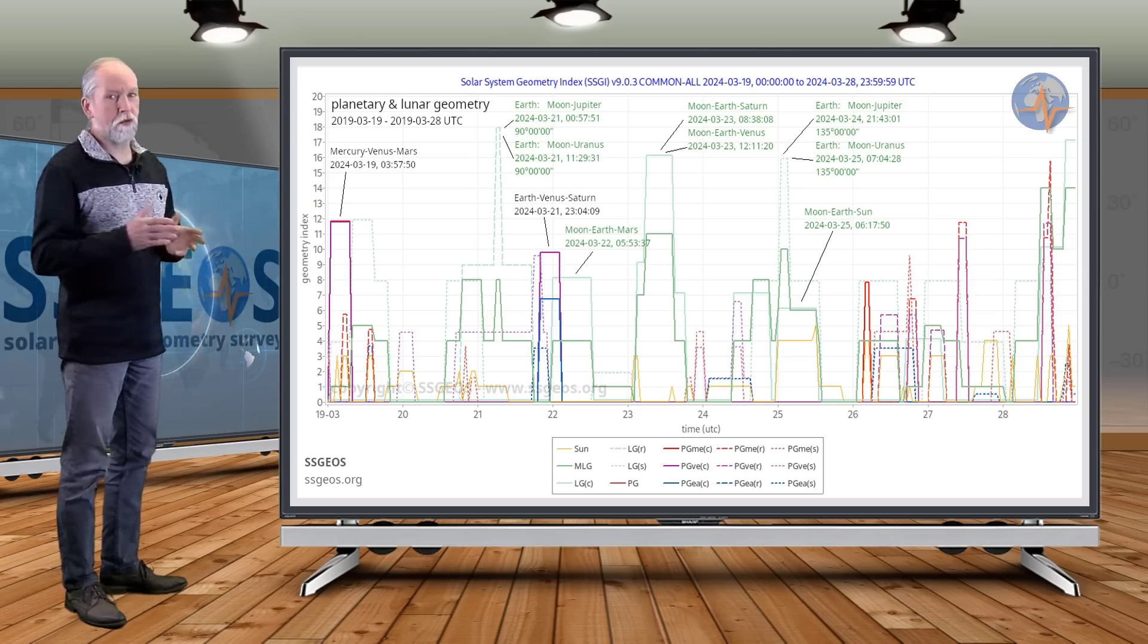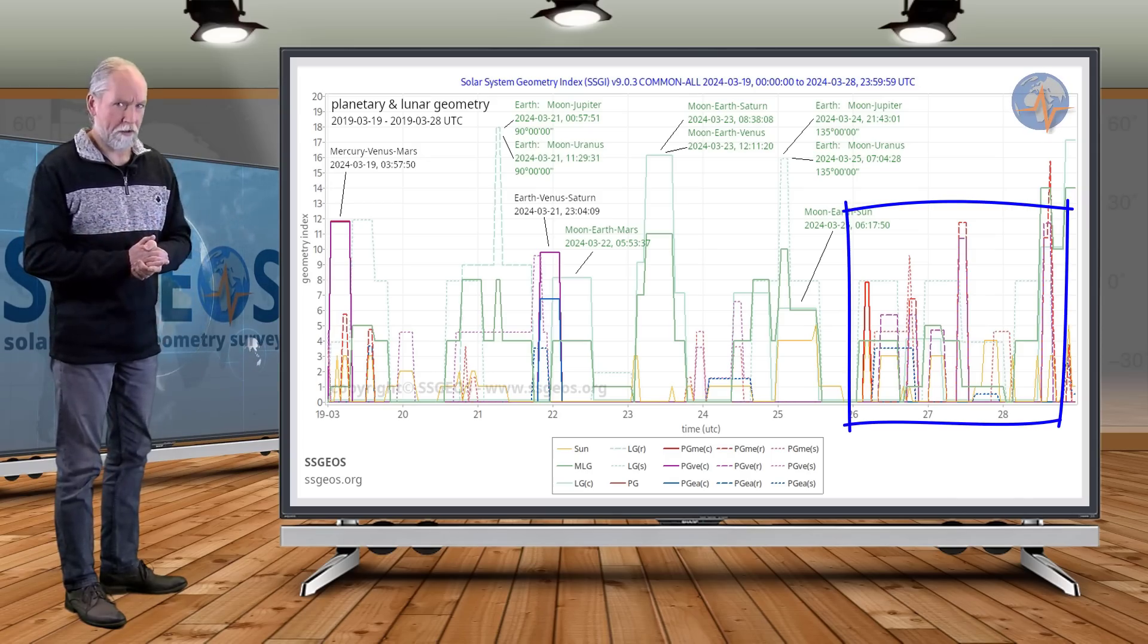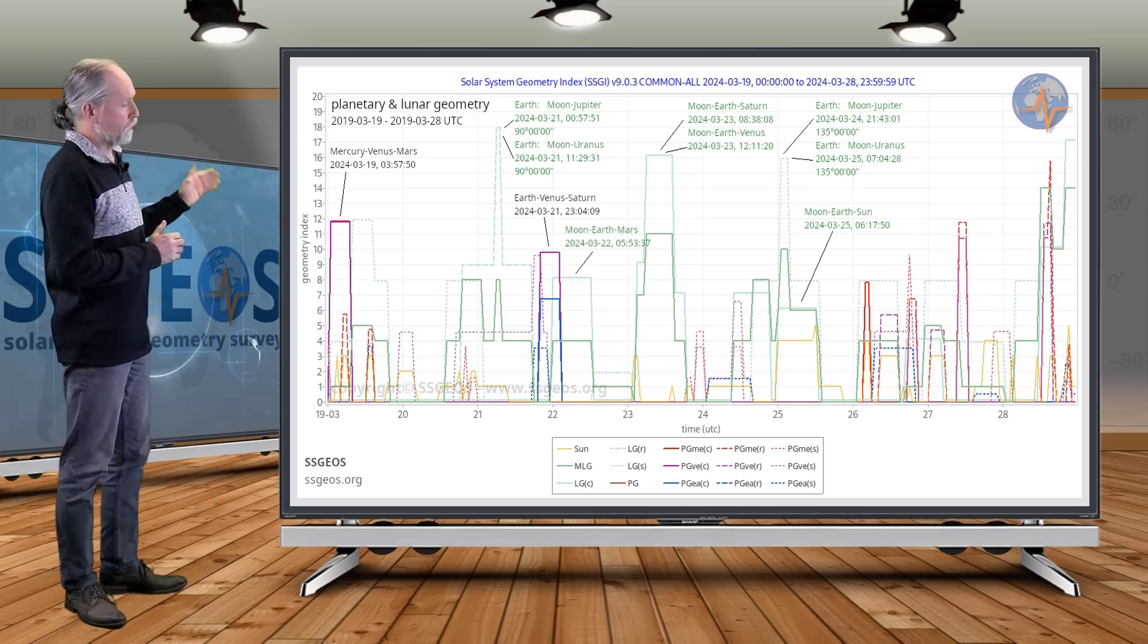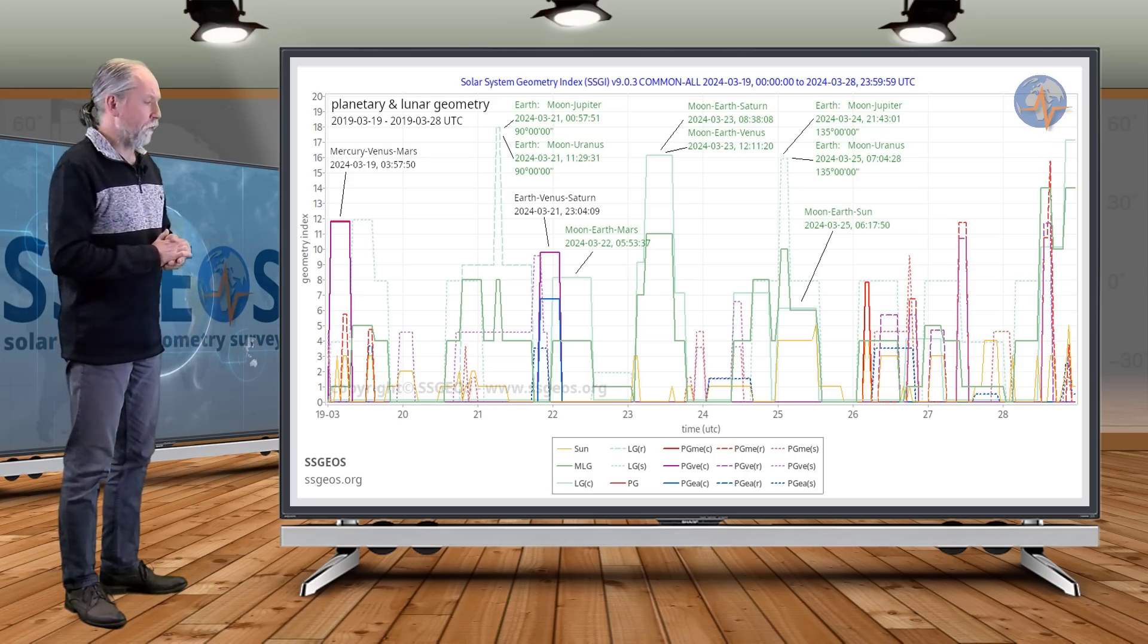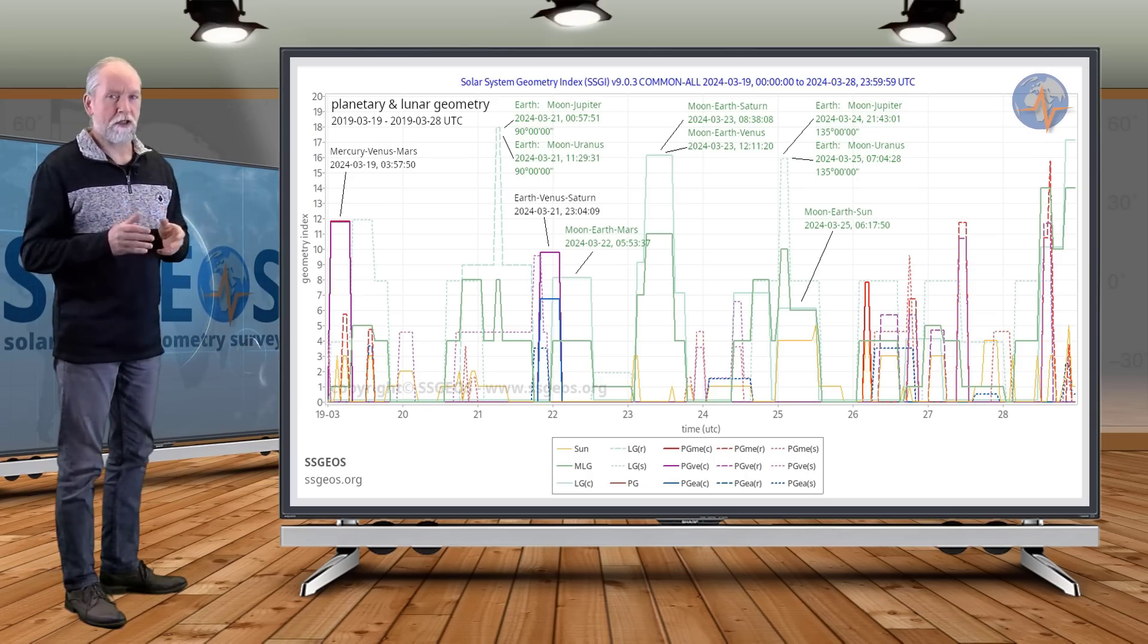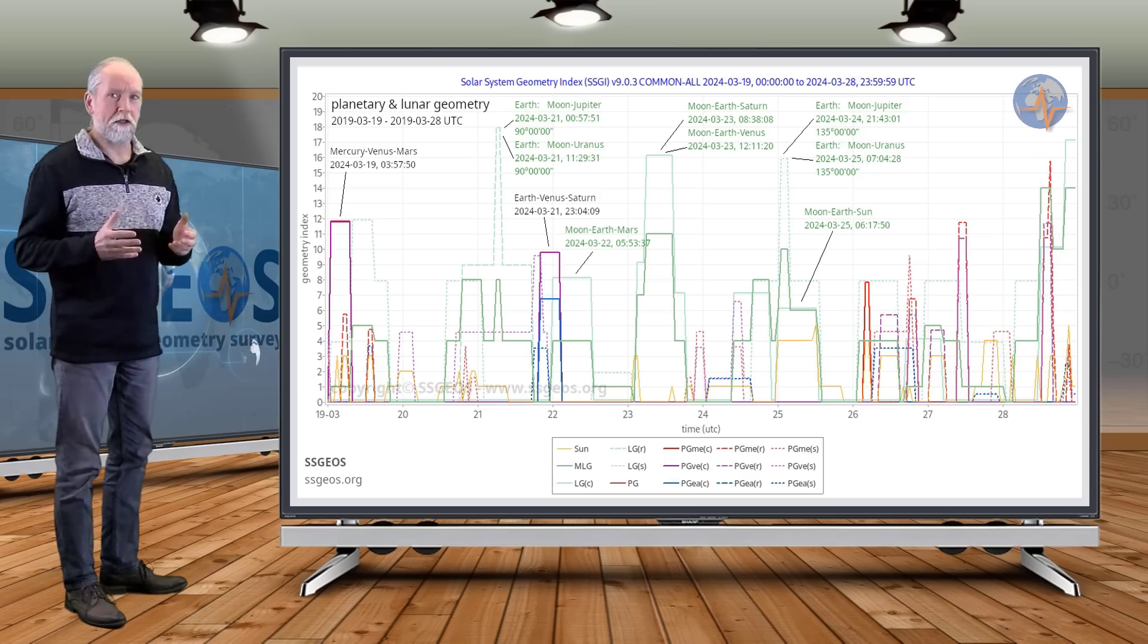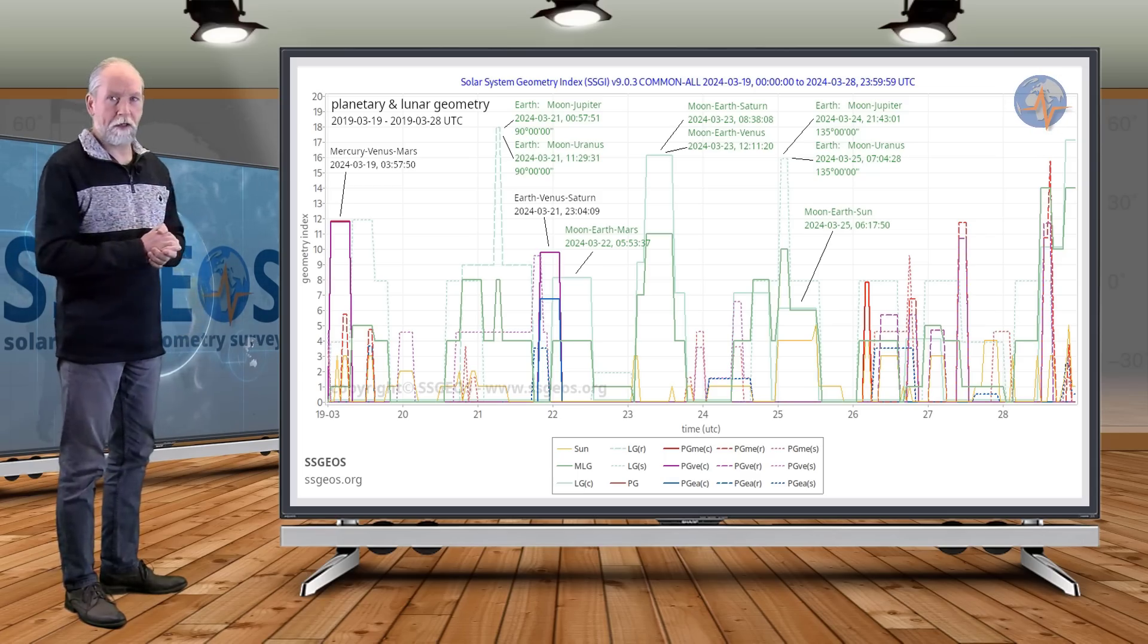And then if we look from the 26th to the 28th, we see the beginning of a clustering of critical planetary geometry, especially on the 27th and the 28th, and that could result in a major seismic event later on or the end of March, maybe the first days of April. But I will cover that in the next update in much more detail because that is very significant. That's the planetary and lunar geometry.